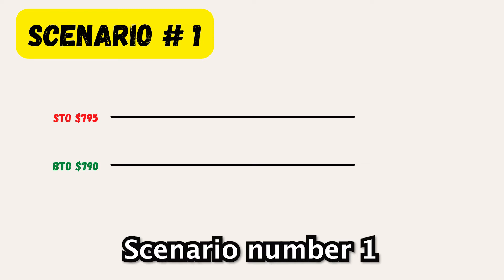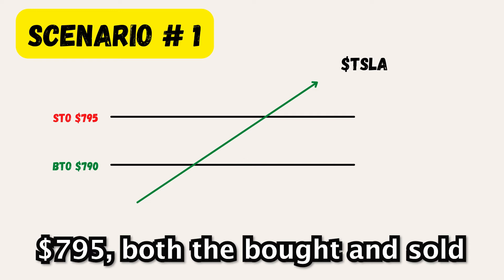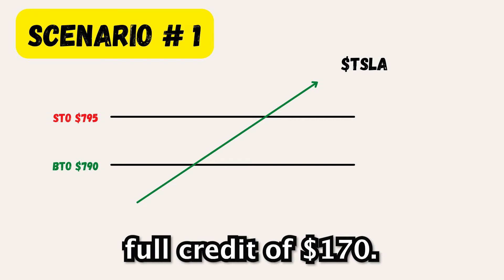Scenario number one: Tesla trades above $795 on the options expiration date. This is the ideal situation. Should Tesla trade above $795, both the bought and the sold put will expire worthless and you will keep the full credit of $170.